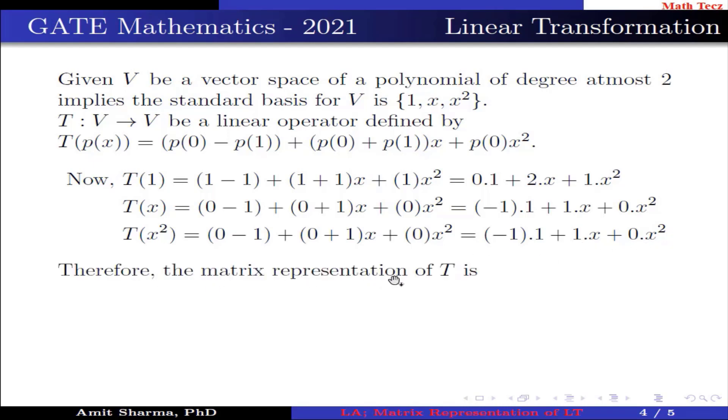Therefore, the matrix representation of T is a 3×3 matrix whose elements are the coefficients of 1, x, and x² in column form. The first column is [0, 2, 1]. The second column is [-1, 1, 0] and the third column is [-1, 1, 0].